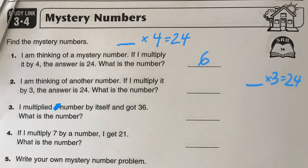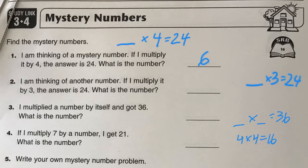So I multiplied a number by itself, and I got 36. That means you have the same number times itself, and the answer is going to be 36. For example, could it be 4? Well, 4 times 4 is 16, so it's not 4. What about 8? If I tried 8 times itself, that's 64 — that's not going to work either. So what number times itself equals 36? If you know your square products, that would be a pretty easy one.